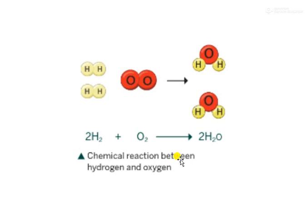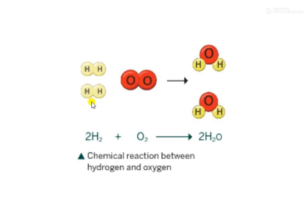Consider this example: hydrogen plus oxygen gives water. In this reaction, two molecules of hydrogen react with one molecule of oxygen. Here, two H₂ molecules are reacting with one O₂ molecule. This hydrogen and oxygen, when reacting with each other, form two molecules of water — two H₂O is formed. So four atoms of hydrogen are reacting with two atoms of oxygen to form two molecules of water.